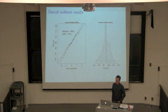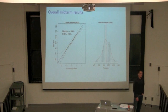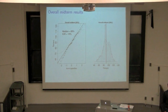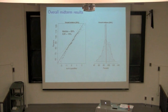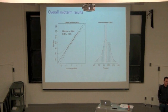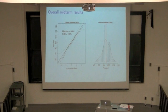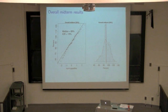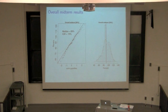Regarding the midterm results — these averages include both the written and the take-home portion. It's 15% for the written and 15% for the take-home, adding up to 30% of the course. I'm happy with the results; the average is pretty high, around 90%. The spread is about a standard deviation. There are a few things like missing details, but it's normally distributed, and I'm happy with the overall performance.